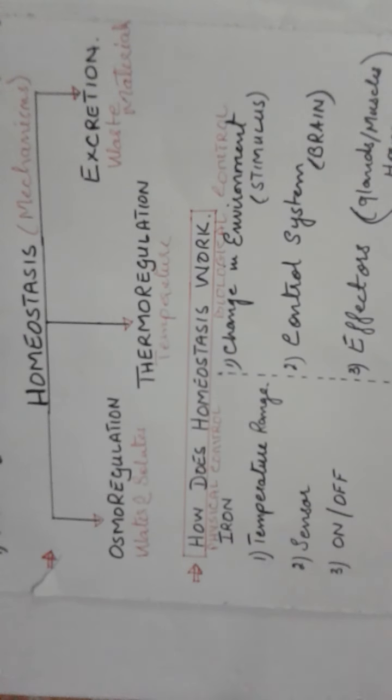Homeostasis works like a physical control mechanism. For example, an iron has three components: receptors, control center, and effectors. The receptors detect stimuli from external environment and reach the control system, then the control system orders the body to maintain balance. You know the temperature gauge on an iron - you can fix it at settings 3, 4, or 5.